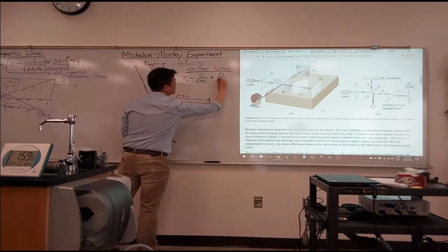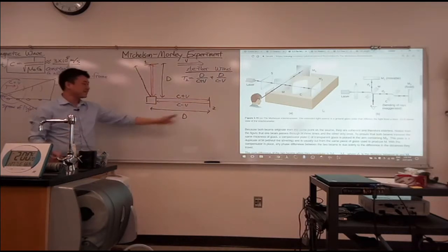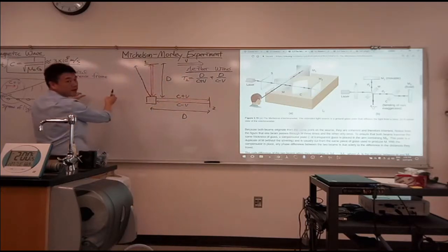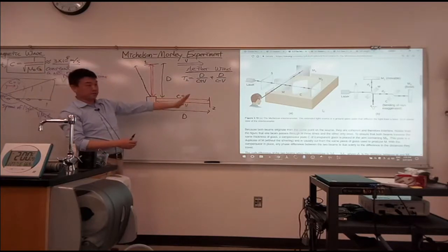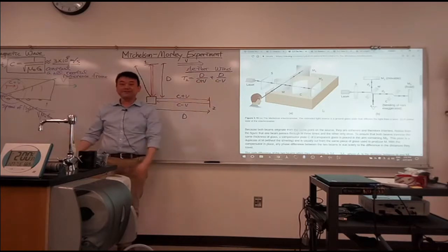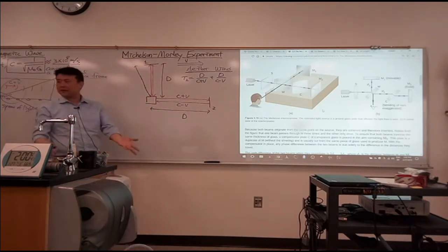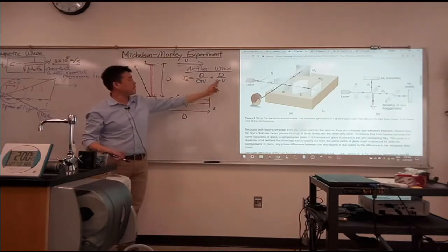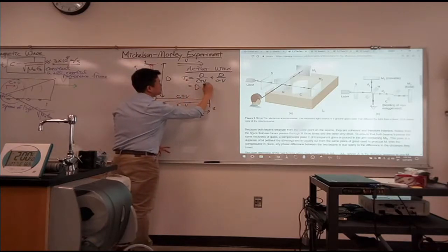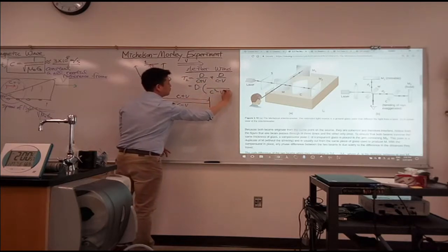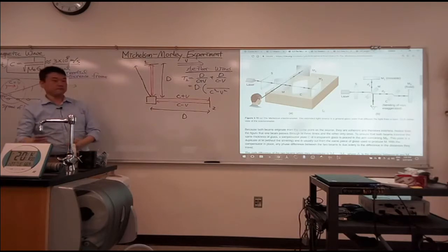Let me call this arm two, this arm one. I think a round trip time for this is easier, so let me do that first. Round trip time T2 is time that takes to get there. Speed is length by time, so time is length by speed. Distance divided by C plus V. And the trip coming back, plus distance divided by C minus V. That direction of ether wind means that this apparatus is moving this way. Going that way, it should take shorter, because this is moving towards the light source. And going back should take longer, because the target is moving away.